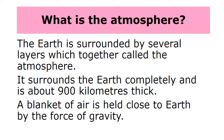What is the atmosphere? The earth is surrounded by several layers stitched together called the atmosphere. It wraps around the earth completely and is about 900 kilometers thick. A blanket of air is held close to earth by the force of gravity.